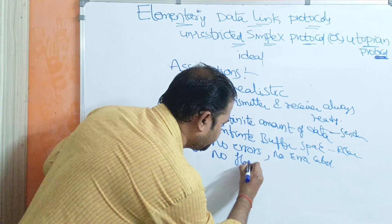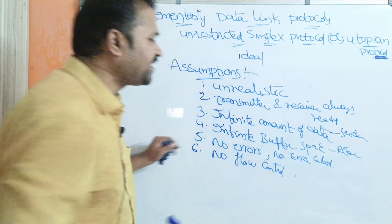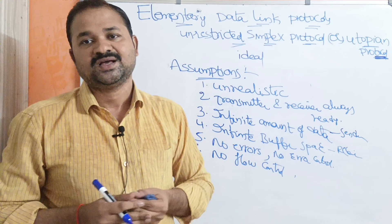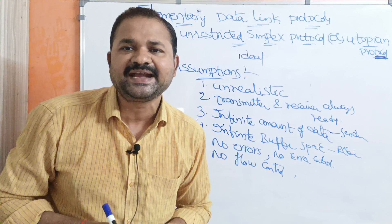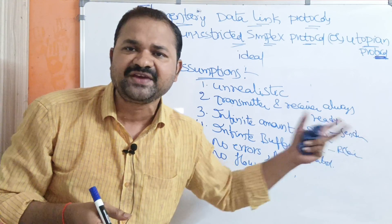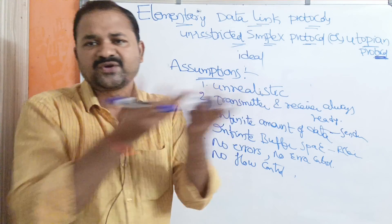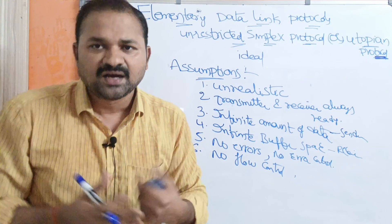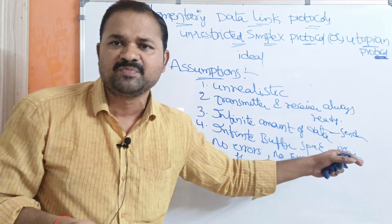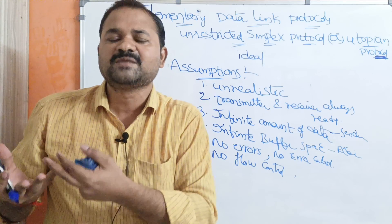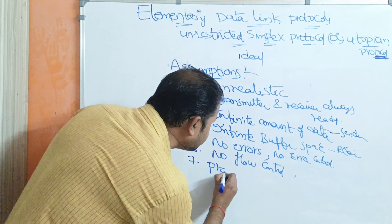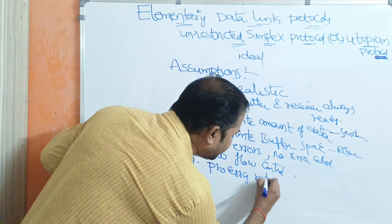The next assumption is no flow control. Since the receiver has infinite buffer space, even if the sender sends data at a very fast rate there is no problem. The receiver can receive the data properly because the buffer space is infinite, so flow control is not needed.